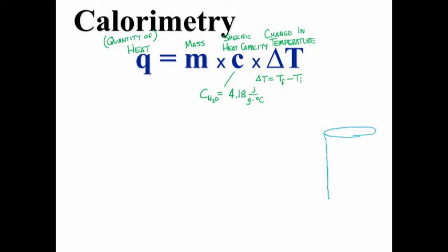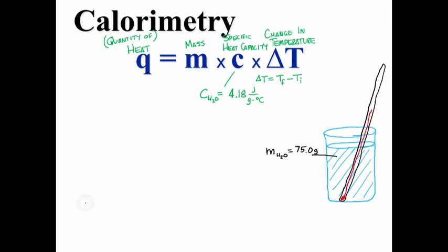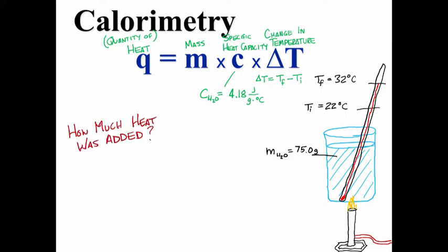Imagine you have a beaker of water with a mass of 75 grams. You measure the initial temperature of that water, and find it to be 22 degrees Celsius. Then, you begin adding heat to the water, which causes the final temperature to rise to 32 degrees Celsius. So the question is, how much heat was added?